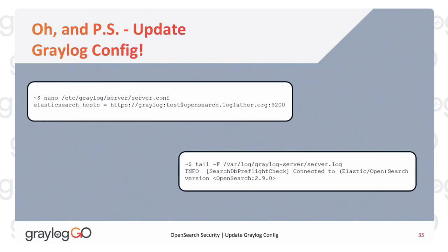We've set up OpenSearch to use the security plugin and configured it. Now we need to update Graylog. If you've been watching your server.log, you'll see messages about some cryptic OpenSSL error — basically Graylog saying it's not able to connect to OpenSearch because OpenSearch is now expecting HTTPS and Graylog is still talking HTTP. Go back into Graylog and change the Elasticsearch hosts to the URL including user authentication that Graylog will use to connect to OpenSearch. Restart Graylog server and look in the server log for the line saying it successfully connected to OpenSearch.